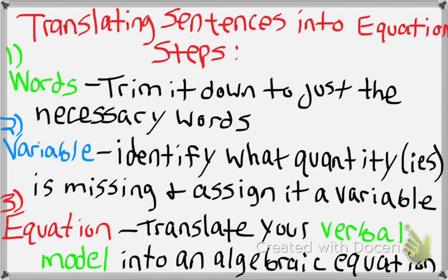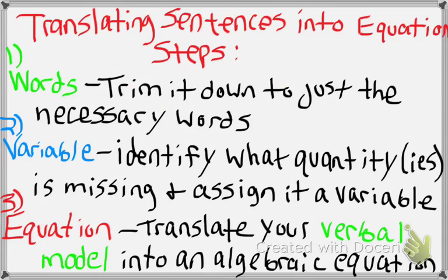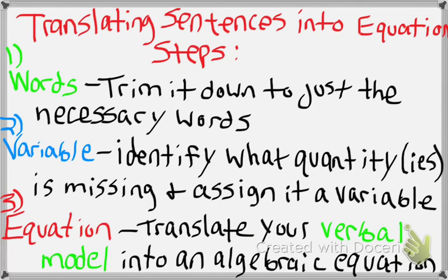Any time you're translating an algebraic sentence, a verbal sentence, or a word problem, there are some general steps you're going to follow. Your first step is to look at the words and trim it down to just the necessary words. That's when there's excess information you don't necessarily need — like if they're naming a location or giving a color of something. Cut out the distracting information and figure out only what applies. That's more of a skill when dealing with word problems about applied situations.